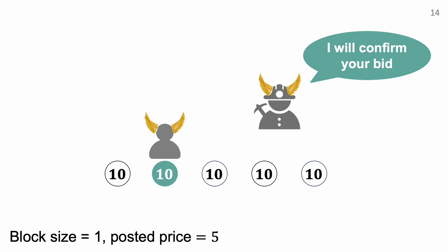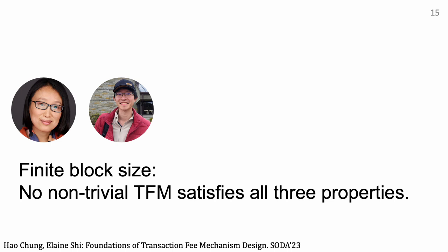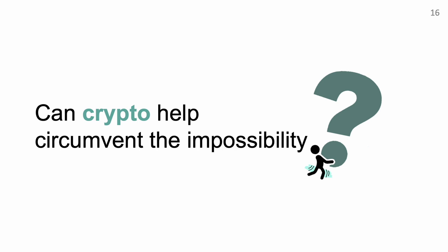So posted price with random selection does not satisfy all three properties — and this is no accident. In their STOC'23 work, Elaine Shi and Hao Chong showed that for finite block size, no non-trivial transaction fee mechanism satisfies all three properties, where trivial means no transaction is ever confirmed. This is quite pessimistic, and we want to circumvent this impossibility result. The simple example gives intuition: the miner implements the mechanism and will always choose the implementation that benefits itself most. So a natural idea to circumvent the impossibility is to enforce honest implementation — and this is exactly what cryptography can do.